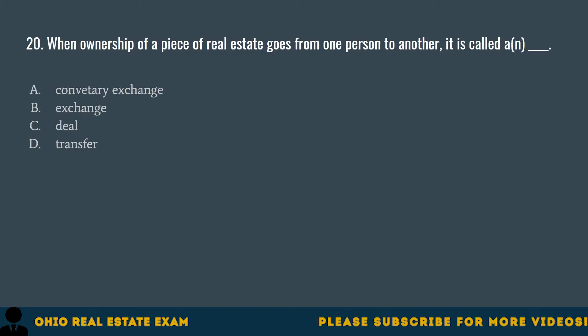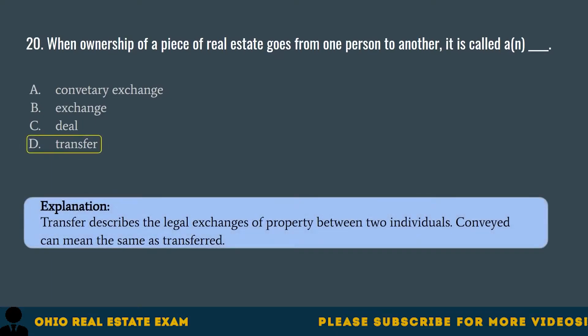Question 20. When ownership of a piece of real estate goes from one person to another, it is called a... A. Conventory exchange. B. Exchange. C. Deal. D. Transfer. The correct answer is D. Transfer. Transfer describes the legal exchange of property between two individuals. Conveying can mean the same as transferred.